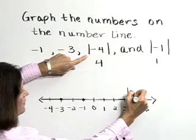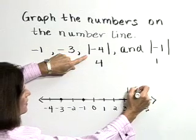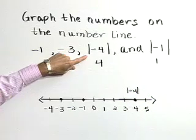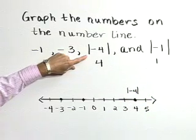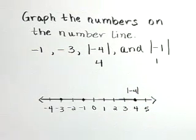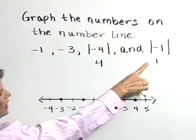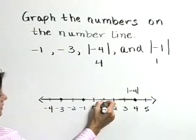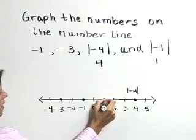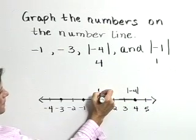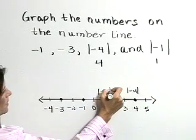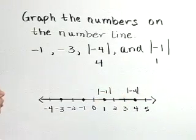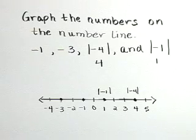Let's just identify that as the absolute value of negative 4. And the absolute value of negative 1, or 1, is located 1 unit to the right of 0 on the number line.